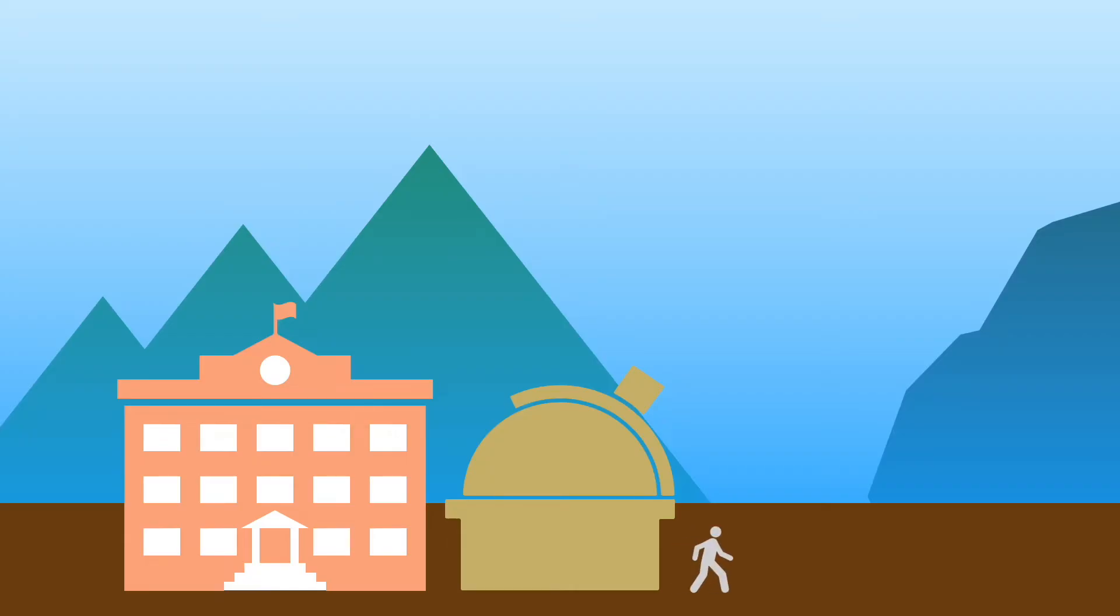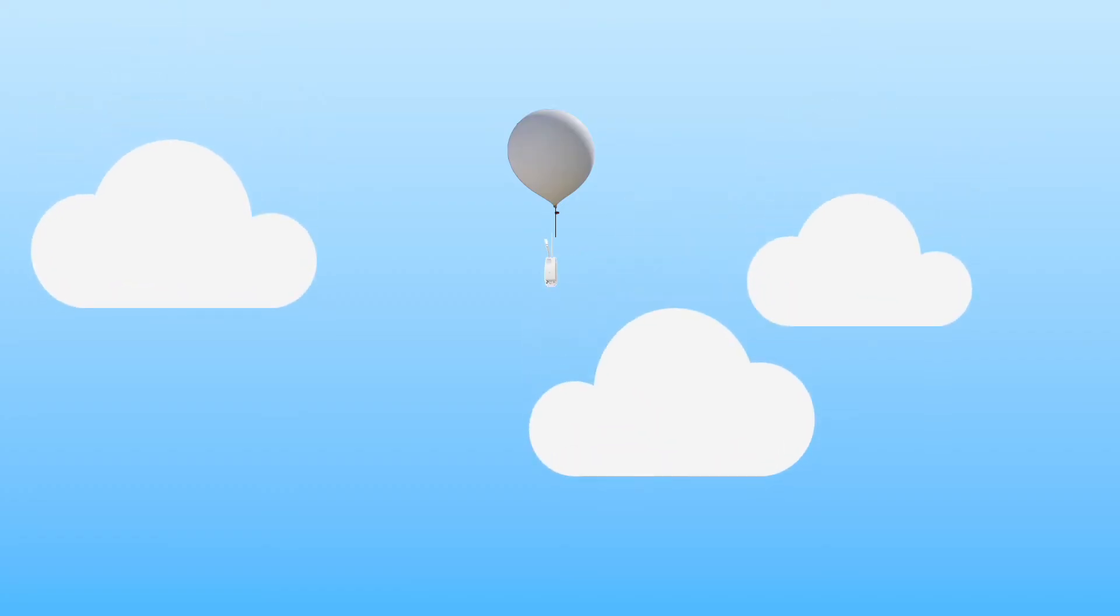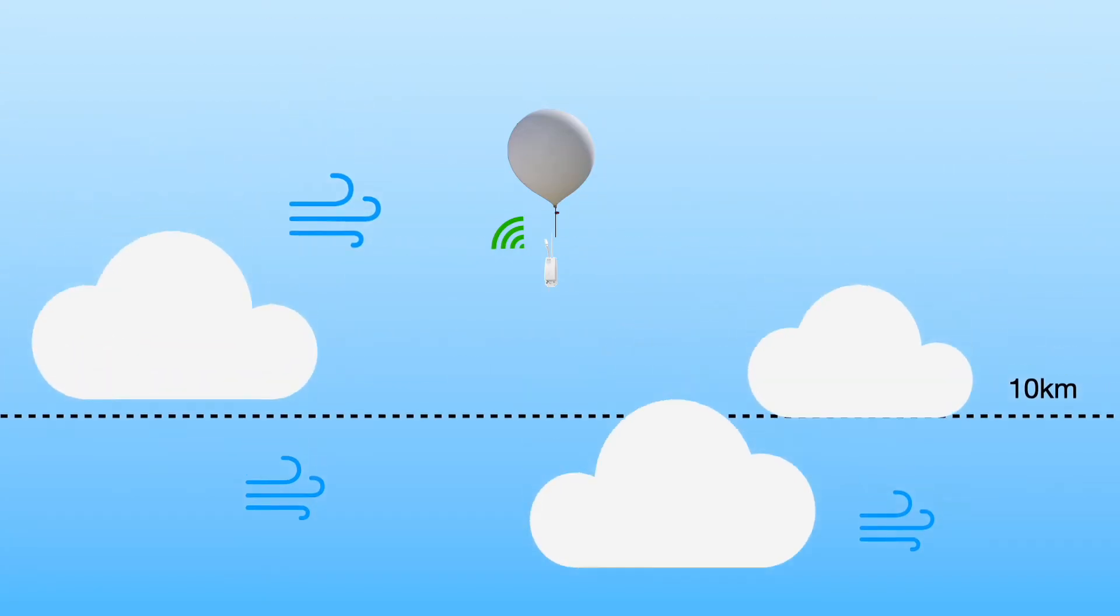Every day, weather stations around the world launch radio sondes to gather critical atmospheric data. These small devices measure pressure, temperature, humidity, wind speed and direction, providing essential information for weather forecasting.